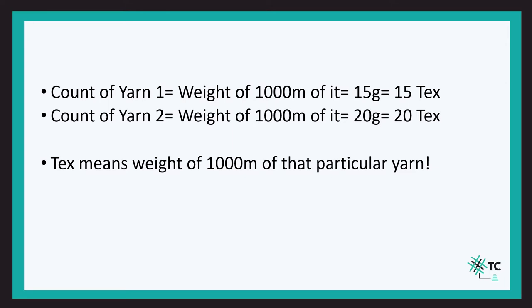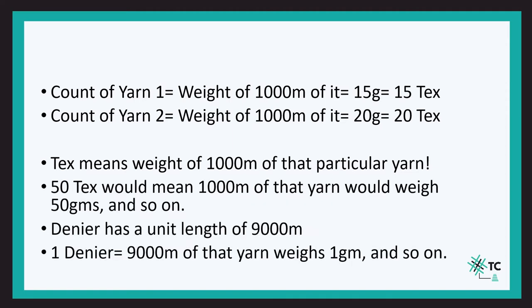We keep the length of 1000 meters as a constant, so for any yarn the direct count in tex means the weight of 1000 meters of that yarn. If we have 1 tex, that means 1000 meters of that yarn weighs 1 gram. If we have 50 tex, that means 1000 meters weighs 50 grams. If we have 102 tex, that means 1000 meters weighs 102 grams.